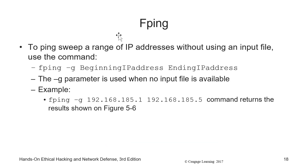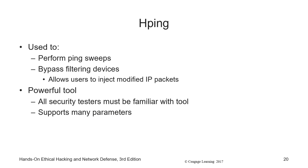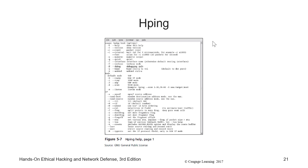The fping -g switch lets you specify a beginning and ending IP address for a full ping sweep. Hping performs ping sweeps and can inject and modify IP packets to bypass some filtering devices — you should be familiar with this tool and its various parameters.